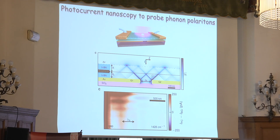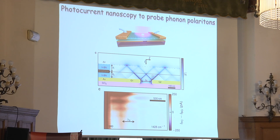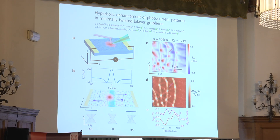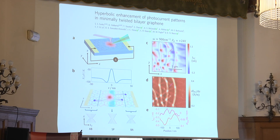Other things you can do with photocurrent nanoscopy: you can look at phonon polaritons — in graphene encapsulated in HBN, if you have the split gate and launch phonon polaritons as Pablo showed, they behave like rays, are absorbed in the graphene, and can generate a photocurrent, showing fringes from the phonon polaritons. Dimitri published work where they had even enhancement of photocurrent patterns using hyperbolic phonon polaritons.